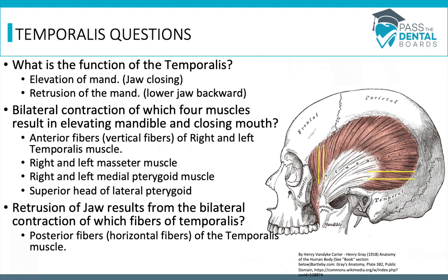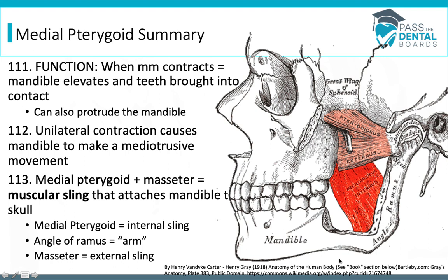Now we're moving on to the medial pterygoid. Looking at this picture and focusing on the angle of the ramus, you'll see the medial pterygoid is on the inside of it, and the lateral pterygoid is on the lateral or outside part of the ramus. This muscle's main function is to elevate the mandible, close the mandible, and bring the teeth into contact. This muscle can also protrude the mandible, though the lateral pterygoid is the main protruder muscle.